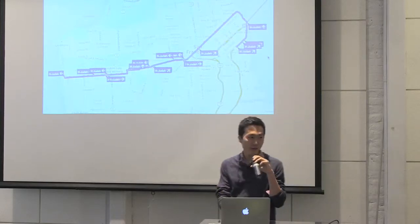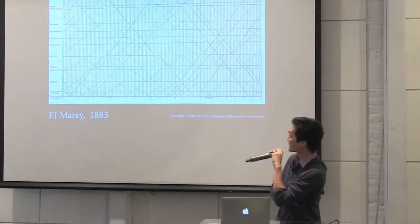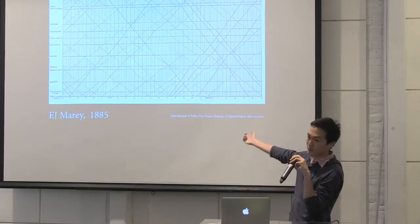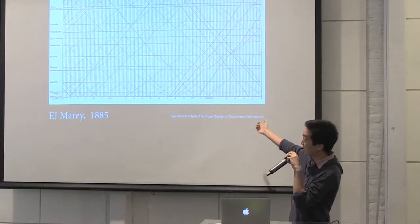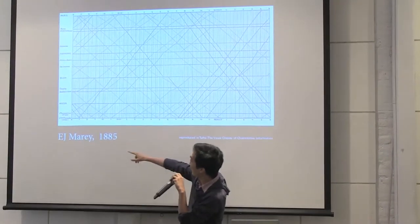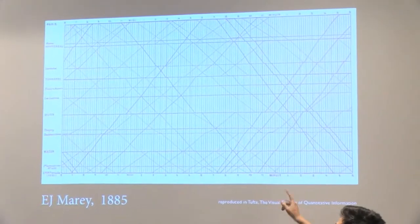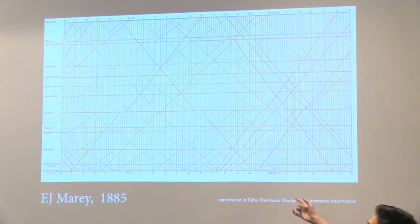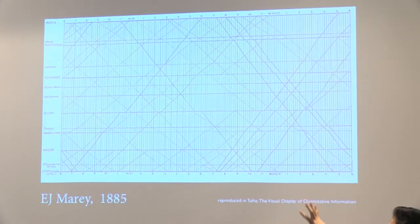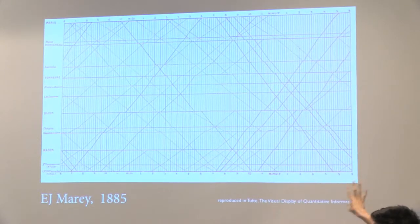I found the answer in Tufte's book. There is a graph from E.J. Marey from the 1800s of a train schedule from Paris to Lyon. At the top it has Paris, at the bottom it has Lyon, and each train is one line. You're able to see that some trains are faster, some are slower. You can also get an idea of where all the trains are at some point in time on the x-axis.